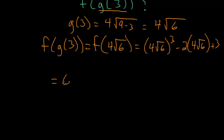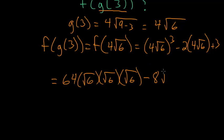4 cubed is 64, and the square root of 6 to the third power, I'll write this way: we have root 6 times root 6 times root 6. And then minus 2 times 4 root 6, or 8 root 6 plus 3.